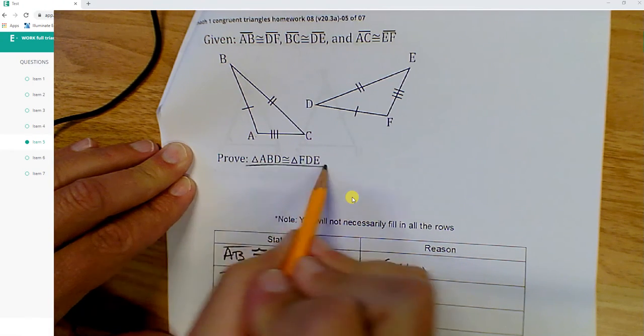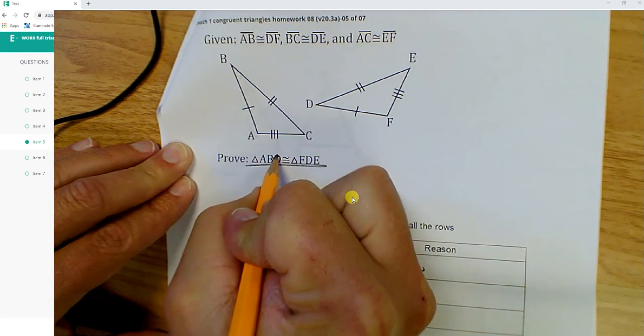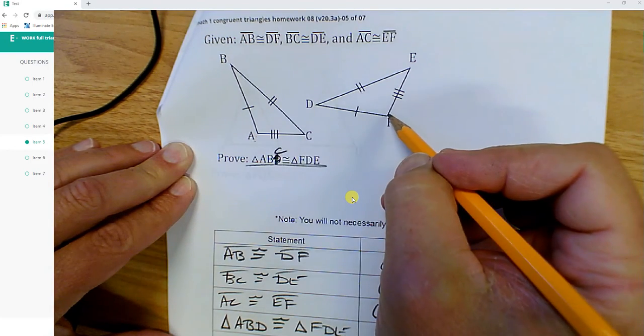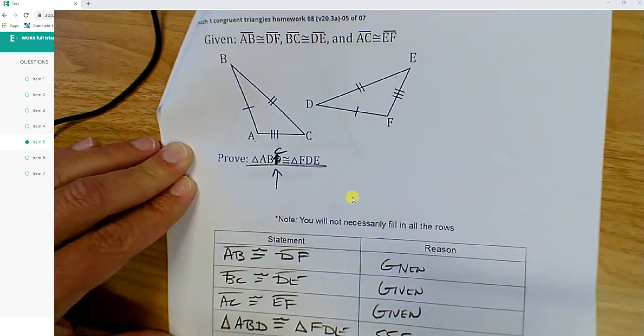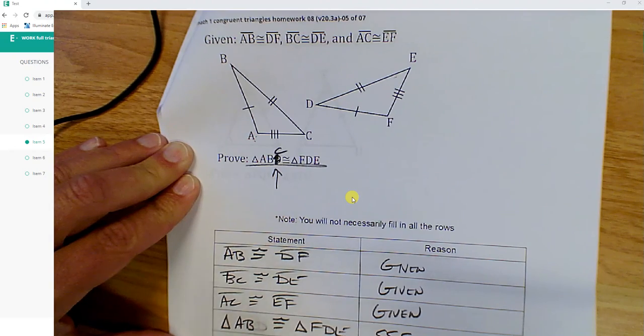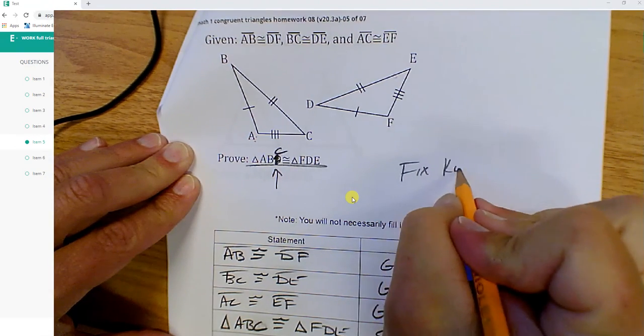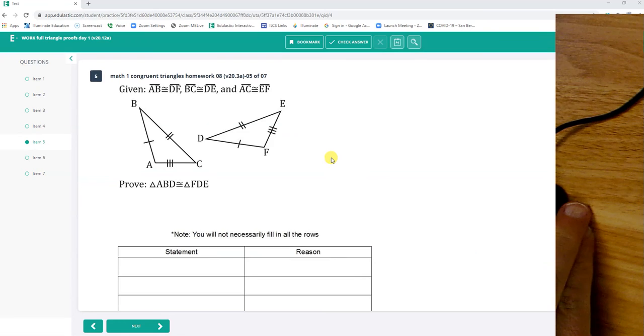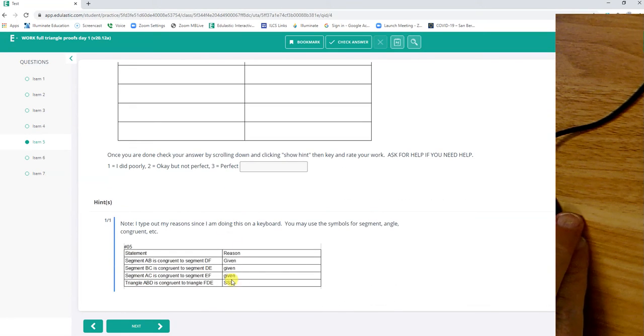This proof needs to be fixed. It needs to be ABC, ABC, FDE. So I need to fix that to a C. ABC. I'll fix that. ABD. It should be ABC right there. So ABD, F, BC, DE, AC, EF. This should be ABC is congruent to FDE by side, side, side. Okay, I'll have to fix that one. No problem.